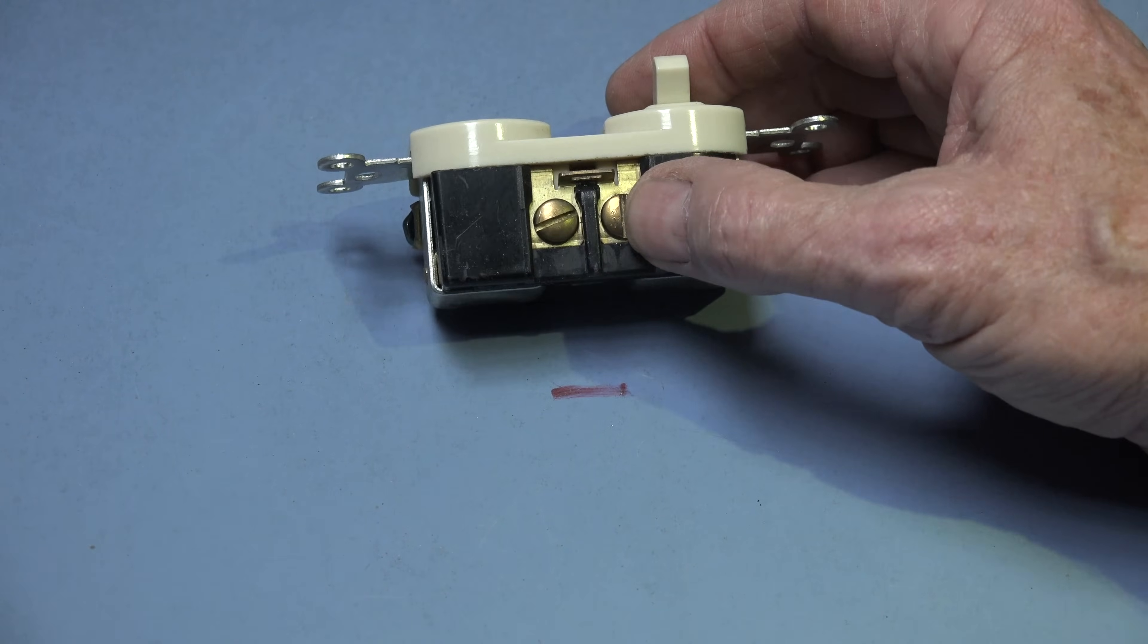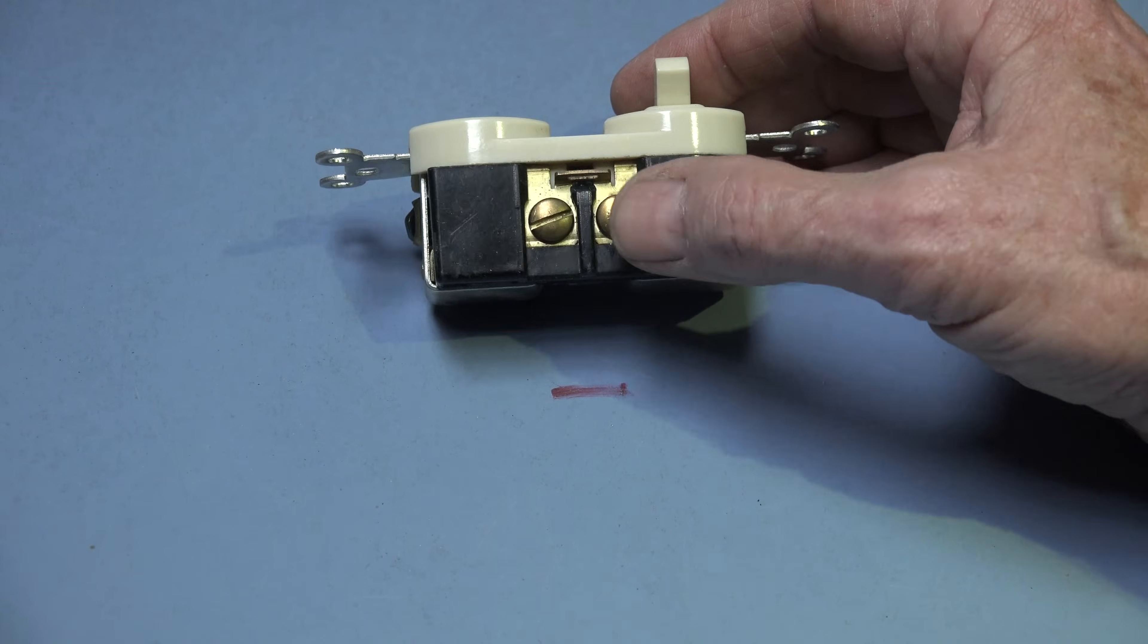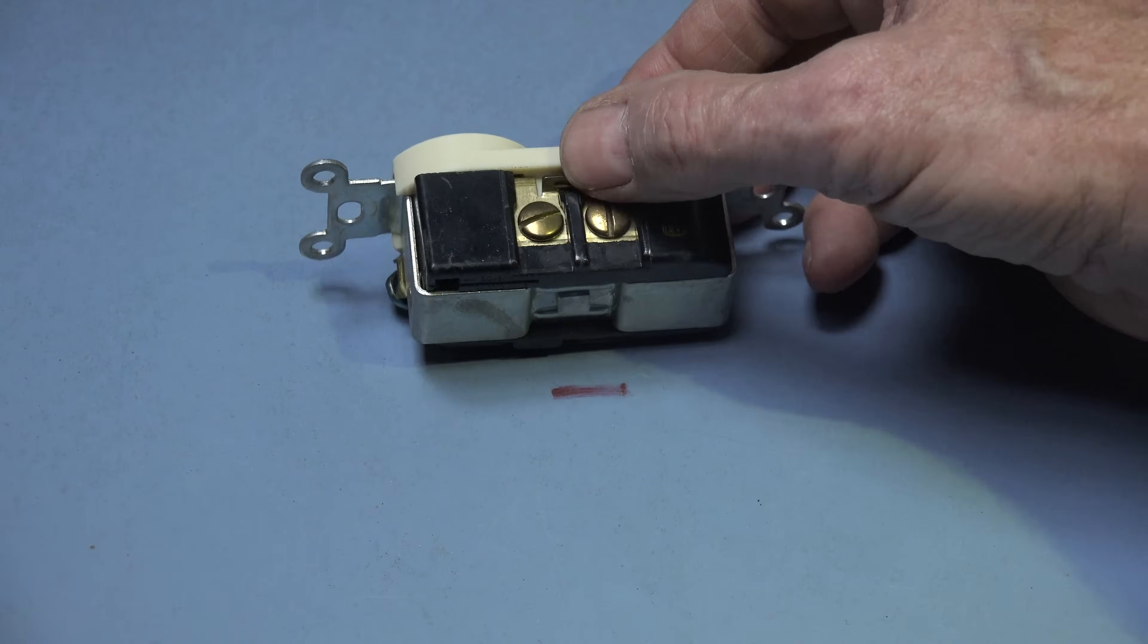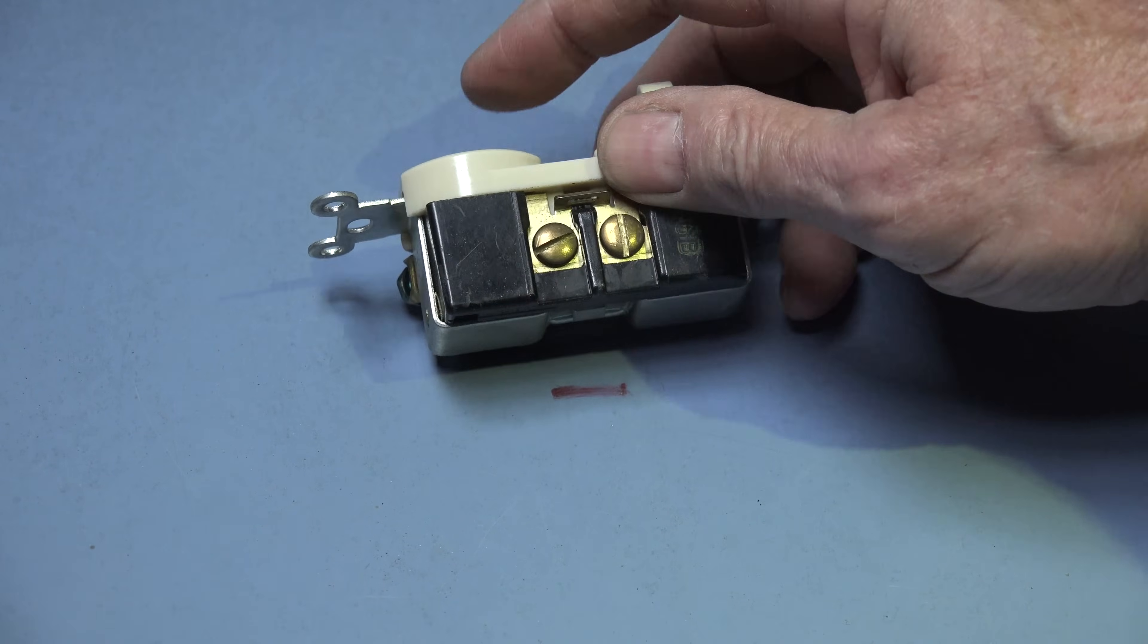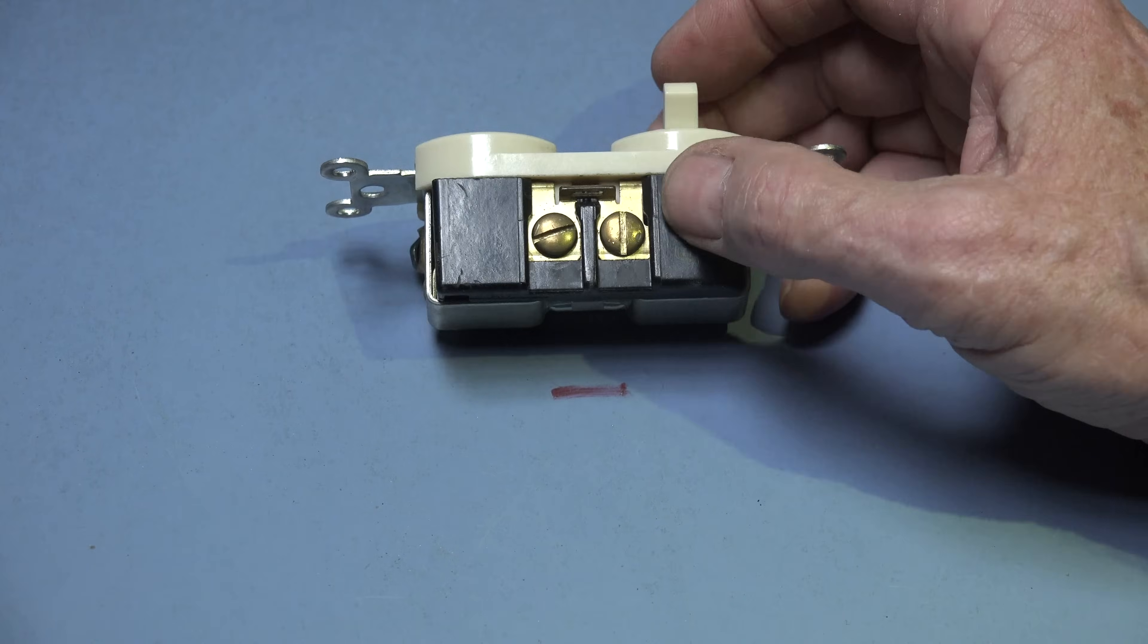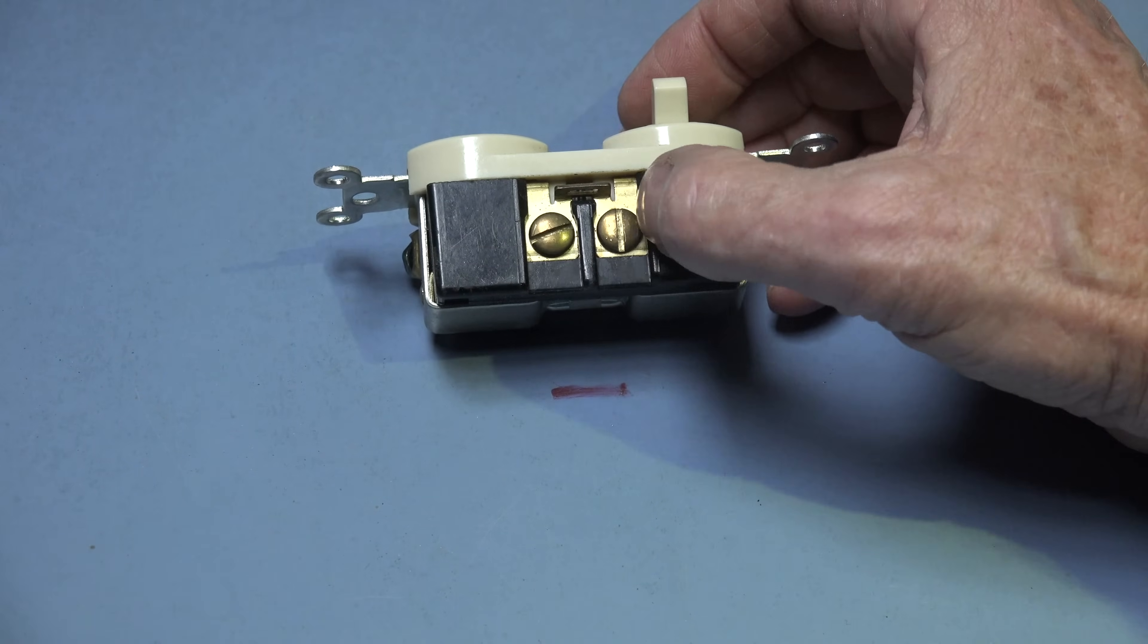On this side I would put my appliance hot lead, the hot lead coming from the appliance. And because the little bridge is still intact, then the outlet would get power. So when I turn this switch off it's going to kill all power to both the appliance and the outlet.